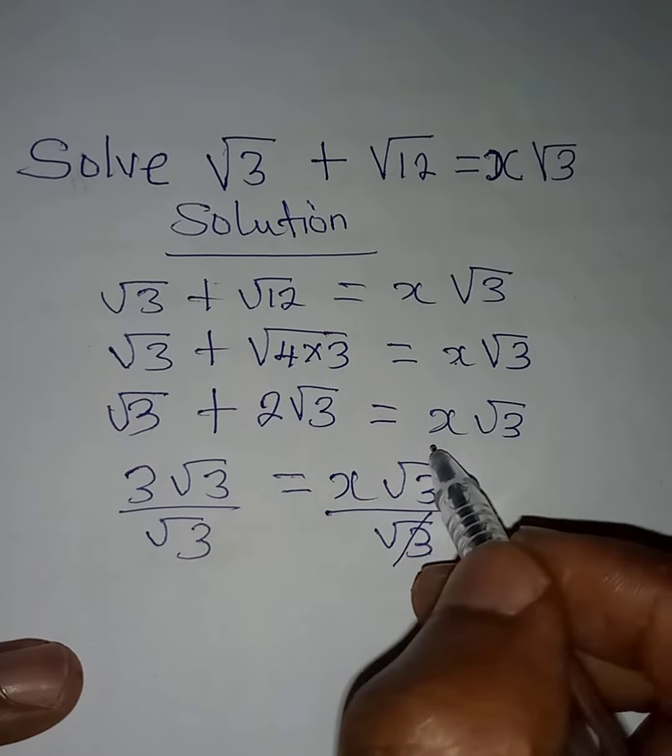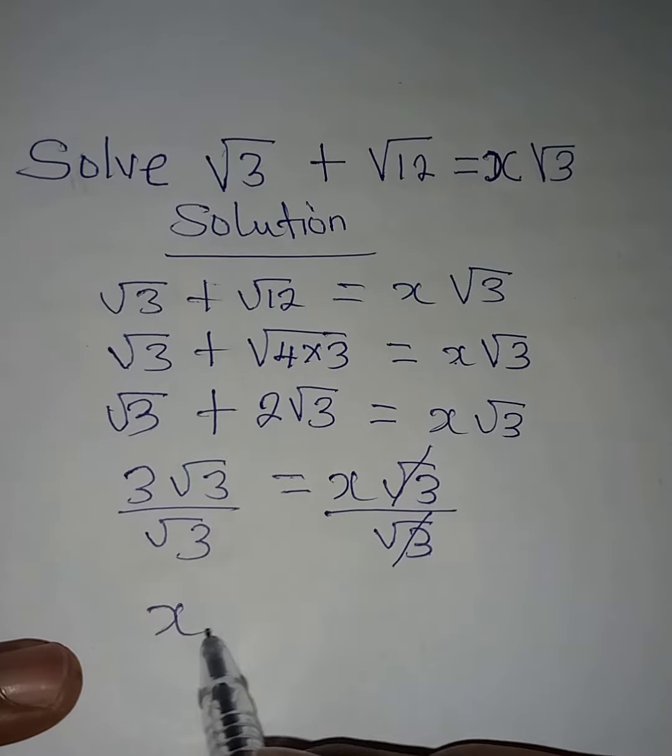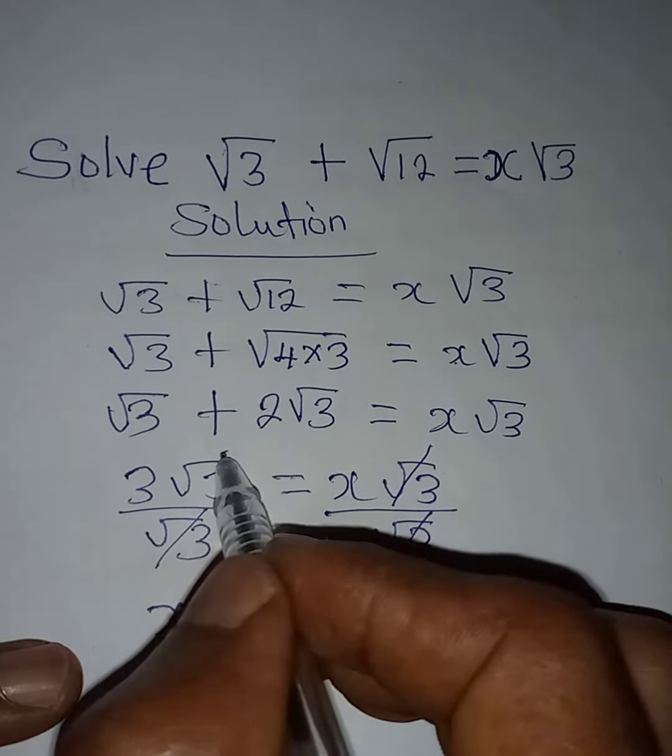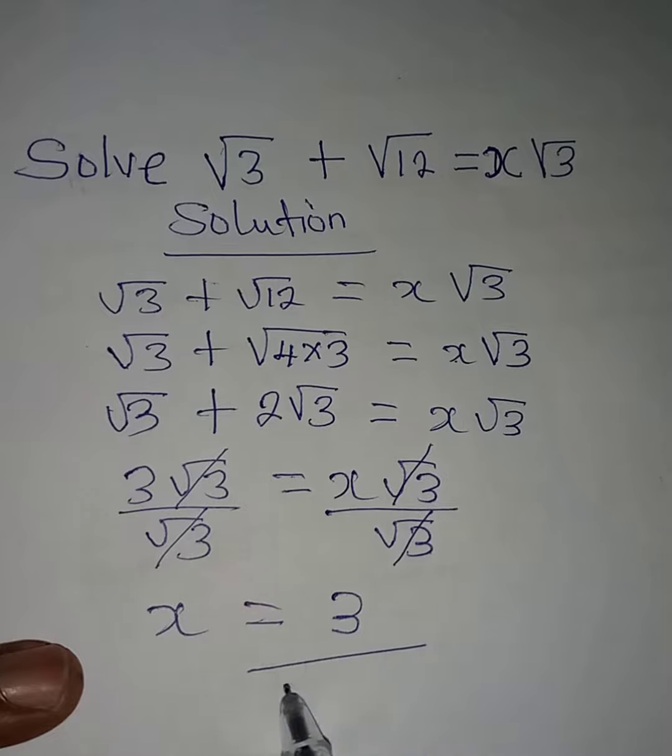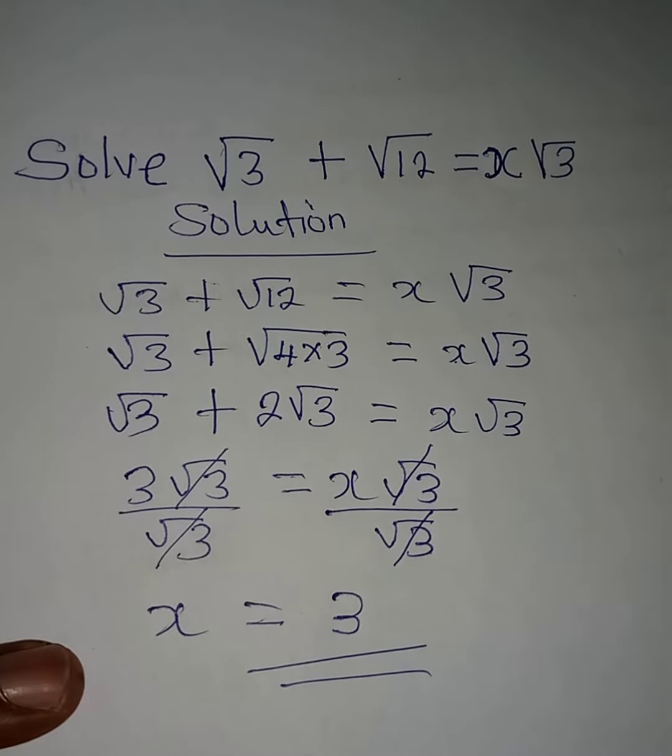√3 will cancel √3, and then x will be equal to... √3 will cancel itself from here and then our answer will be 3. So the value of x is 3. Thank you for watching.